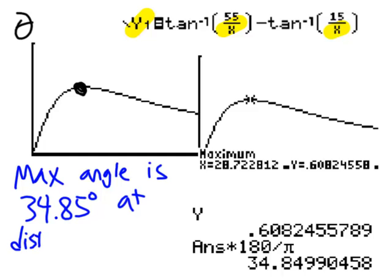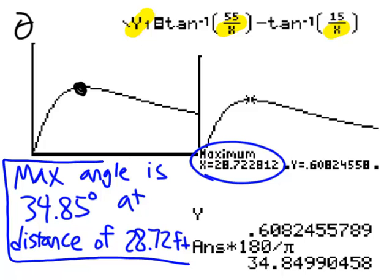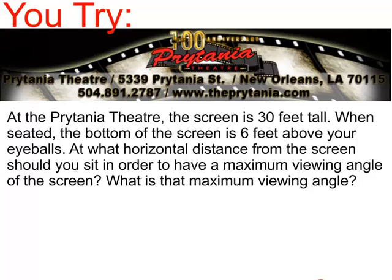So our answer: the maximum viewing angle is 34.85 degrees at a distance of 28.72 feet. Now let's see if you can do something like that on your own. At the Pretendia Theater, the screen is 30 feet tall and when you are seated the bottom of the screen is 6 feet above your eyeballs. At what horizontal distance from the screen should you sit to have the maximum viewing angle, and what is the maximum viewing angle?